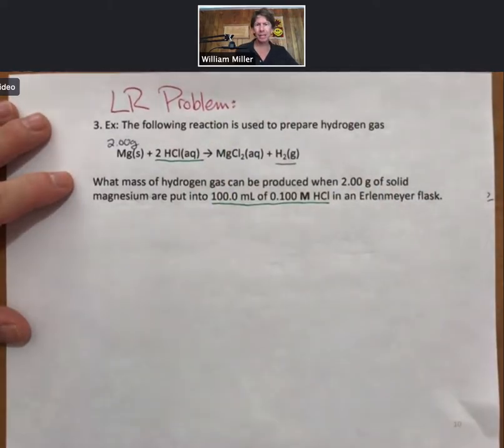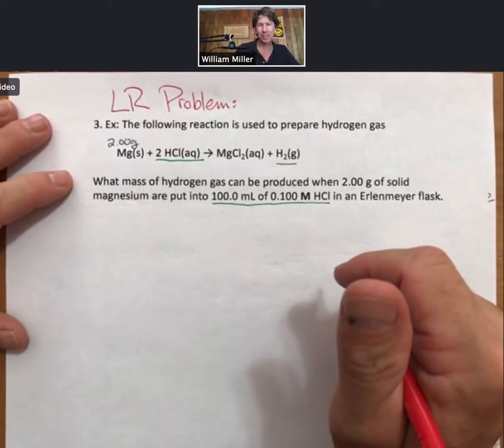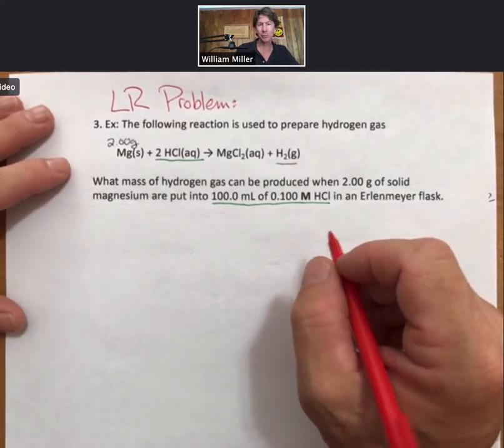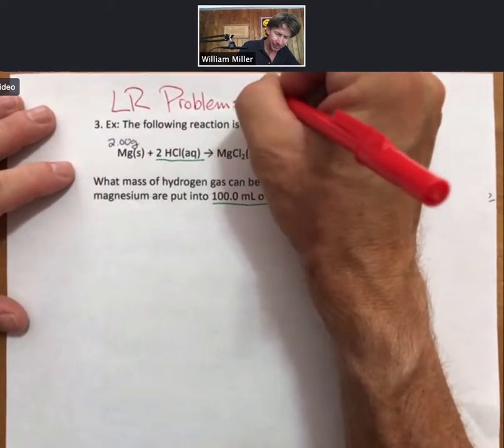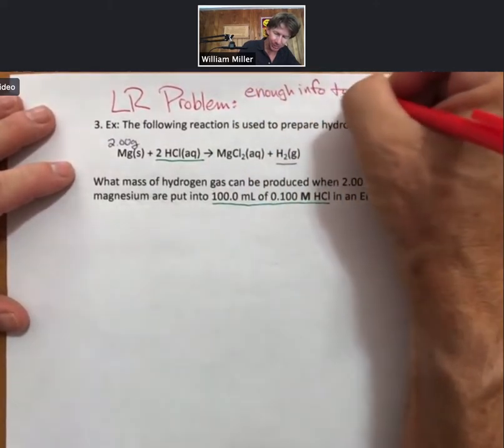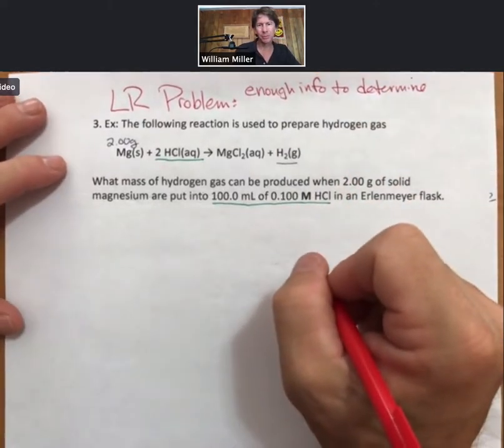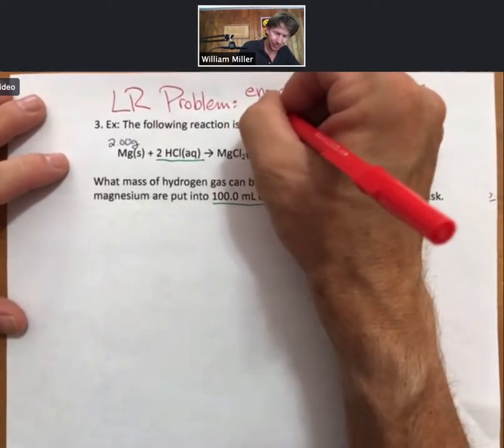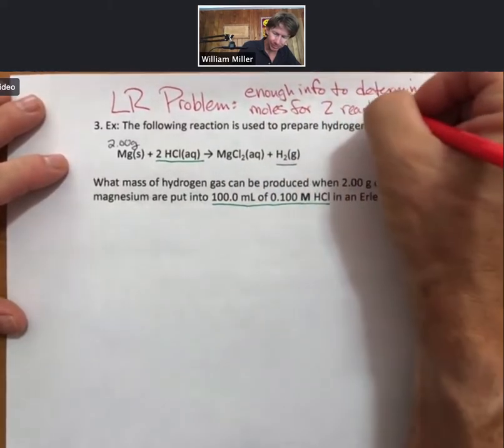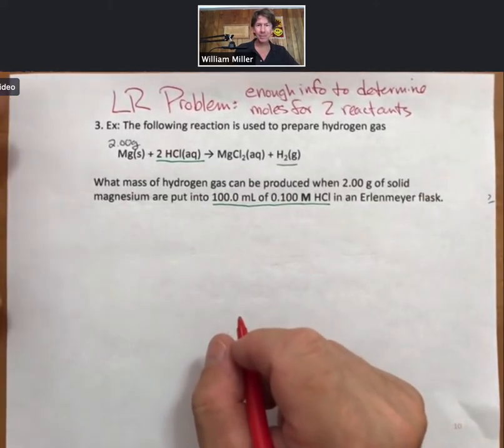And the way to read and identify a limiting reactant problem is that you have enough information to determine moles for two reactants. So I'm going to write enough info to determine moles for two reactants. And that's what we'll do. We'll take that information.